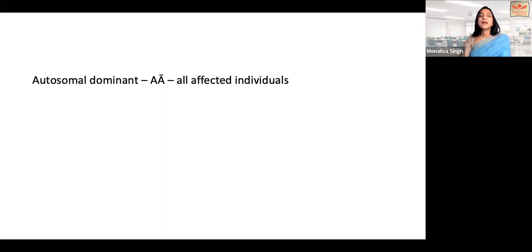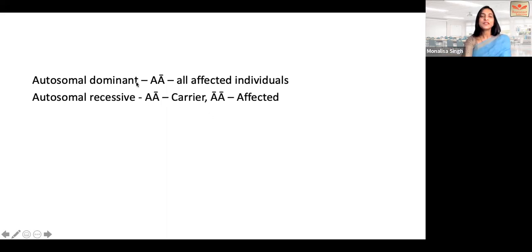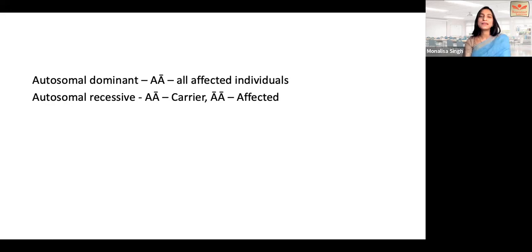Whereas in autosomal recessive conditions, both alleles have to be mutated for the person to be affected. So if the genotype is AA' where A' represents the mutated allele, the person is called a carrier — this person will not have the disease. If a person inherits both mutated alleles from both parents, they will be affected. Since there is a carrier state in recessive conditions, there can be skipped generations. A phenotypically normal carrier, if they marry another carrier, can pass the mutation to the next generation, and one of the offspring can be affected.